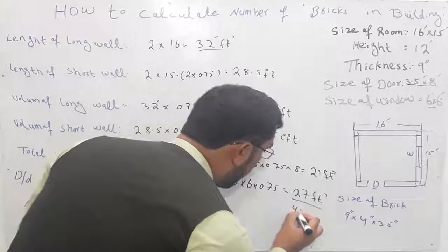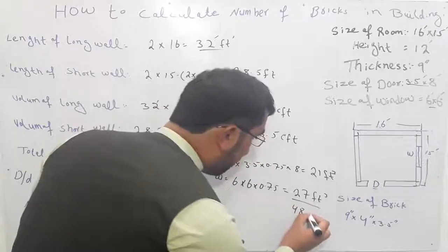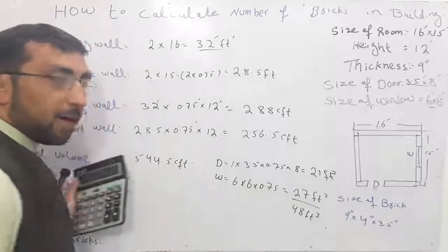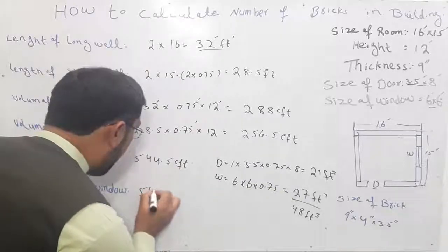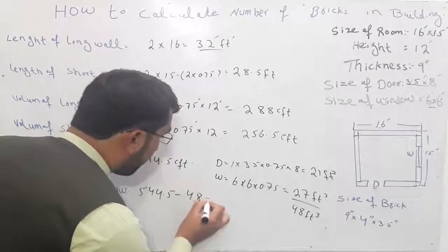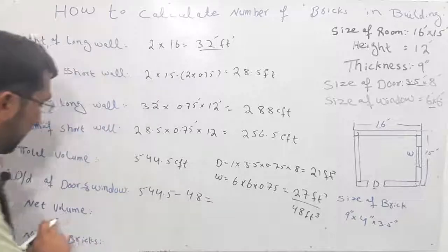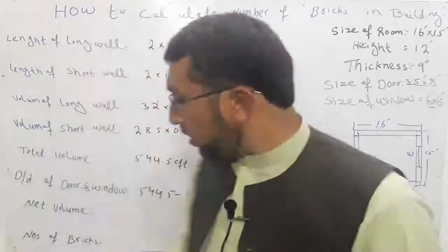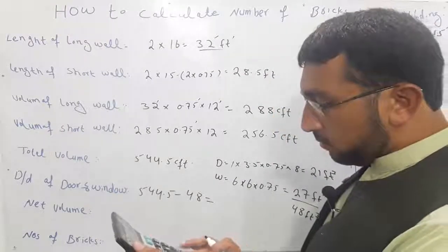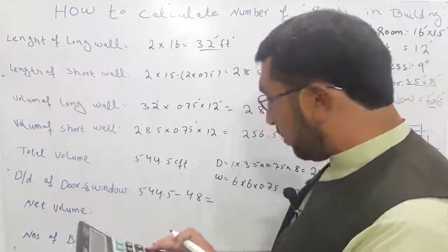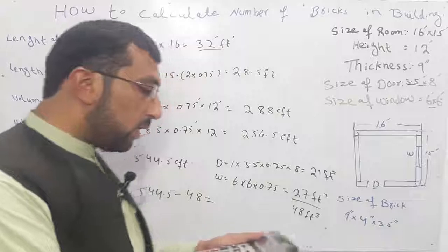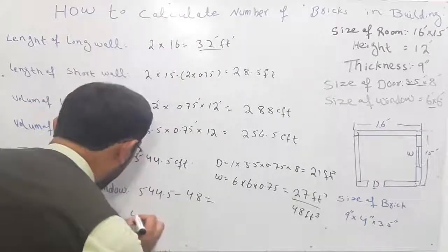The total wall is minus the door, minus 48. The net volume, the net volume is...